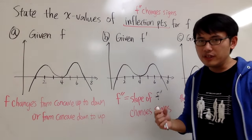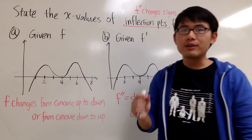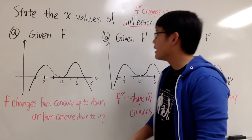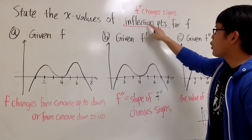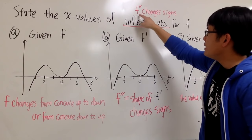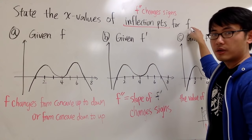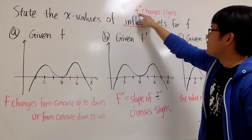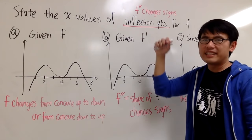We have three different approaches according to the situation to find the inflection points for the original. The inflection points for the original function f is the place where the second derivative changes signs from positive to negative, or from negative to positive.